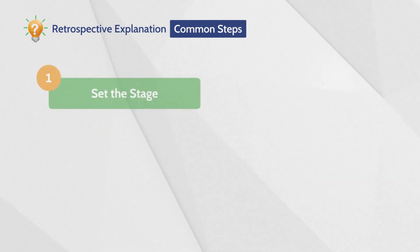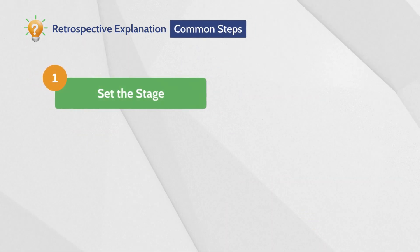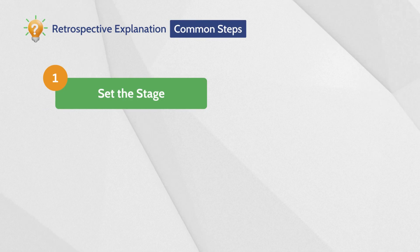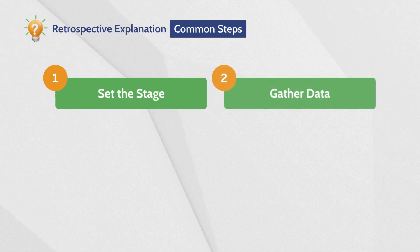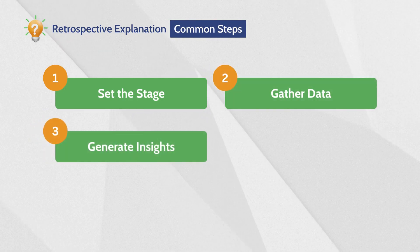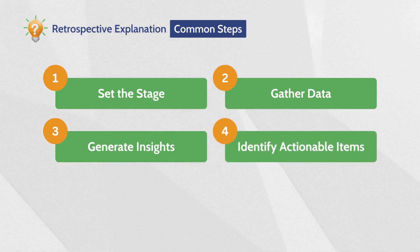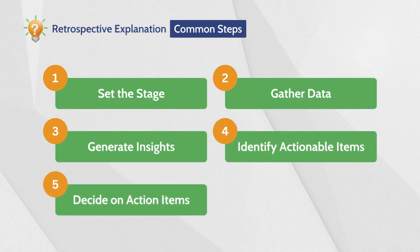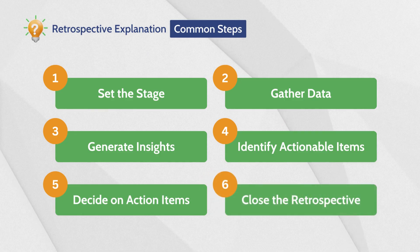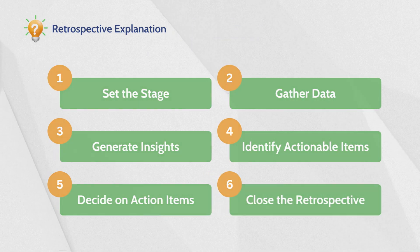There are some common steps that most Retrospectives follow: 1. Set the stage. 2. Gather data. 3. Generate insights. 4. Identify actionable items. 5. Decide on action items. 6. Close the Retrospective.